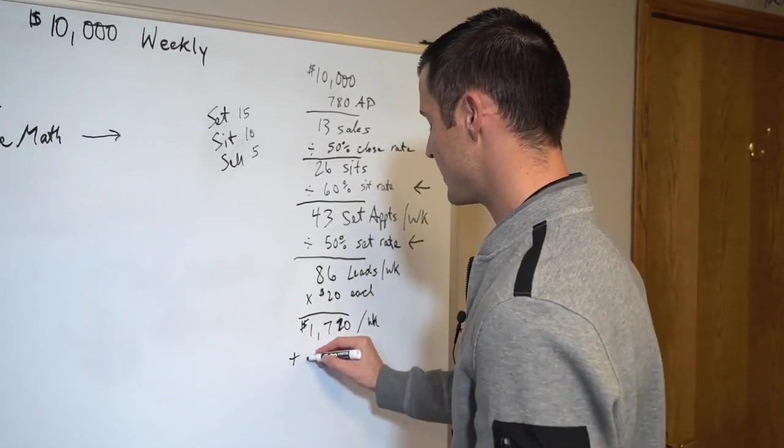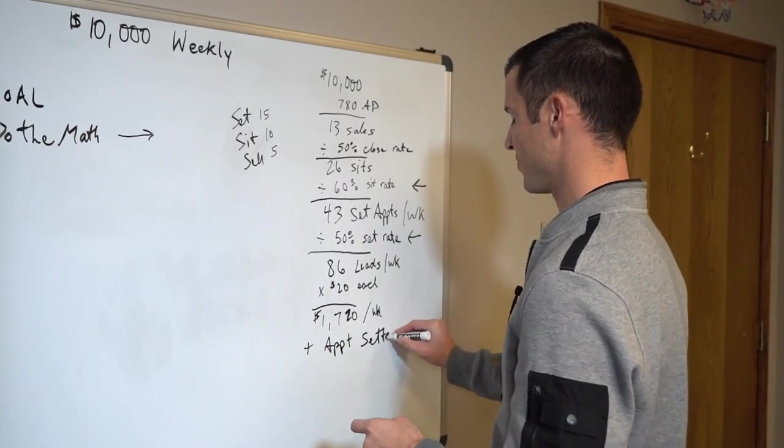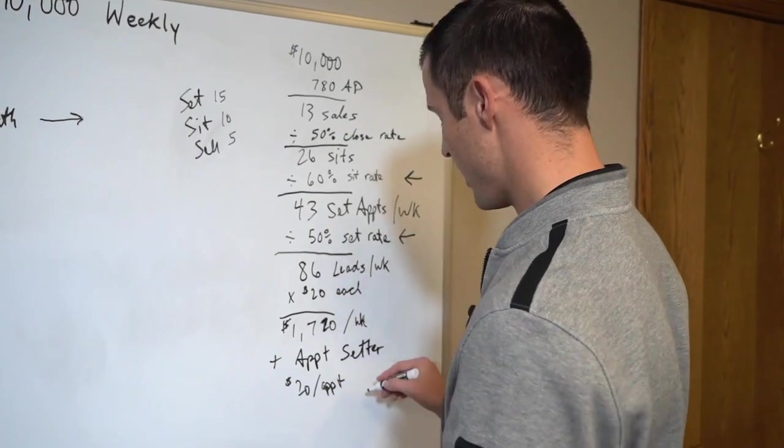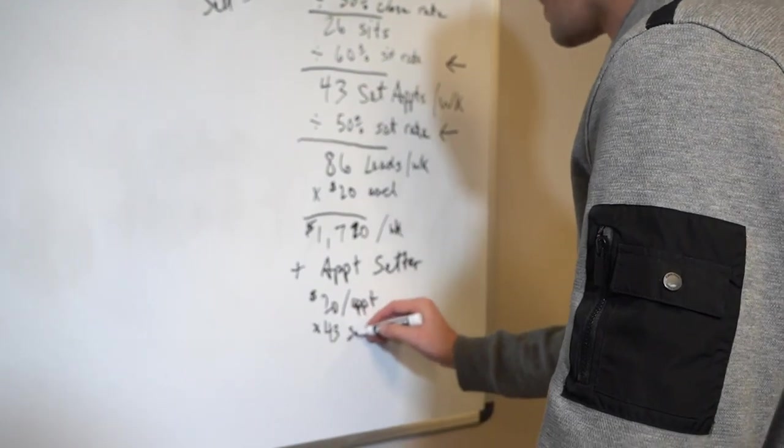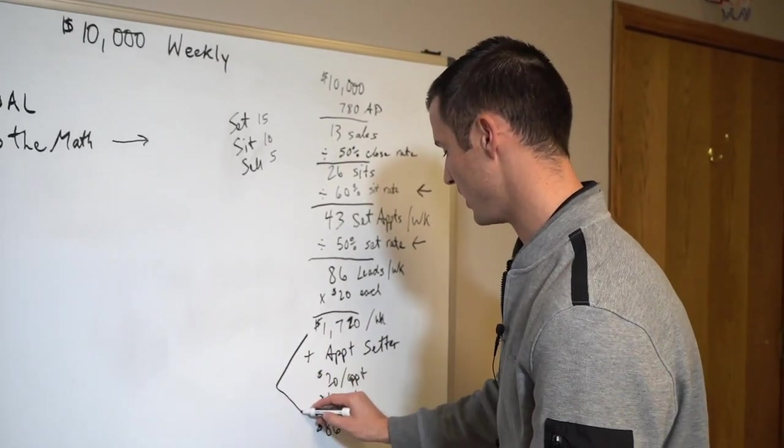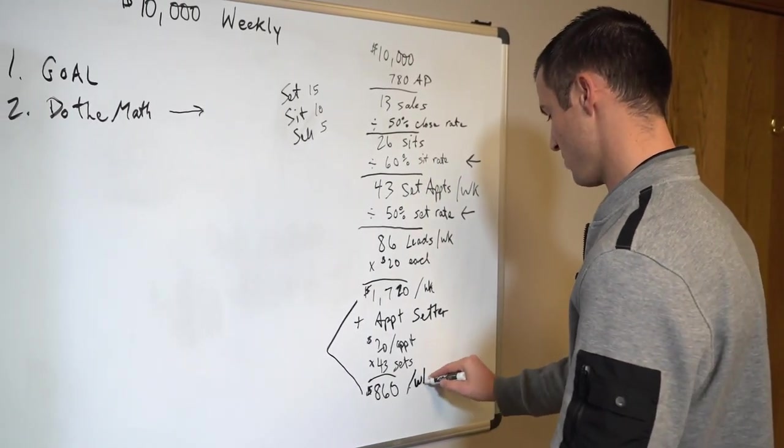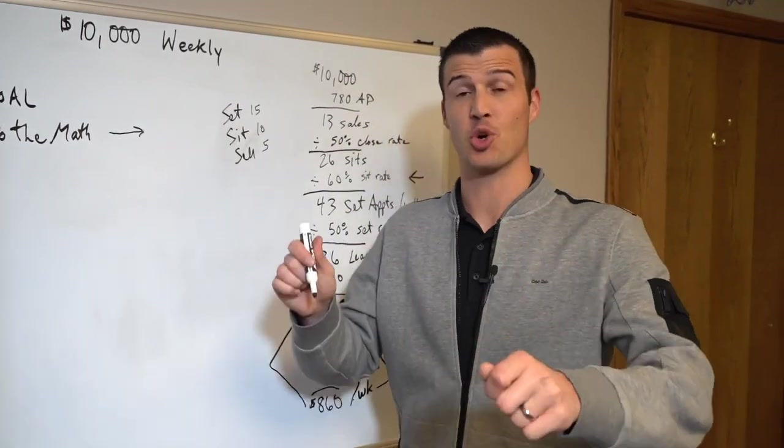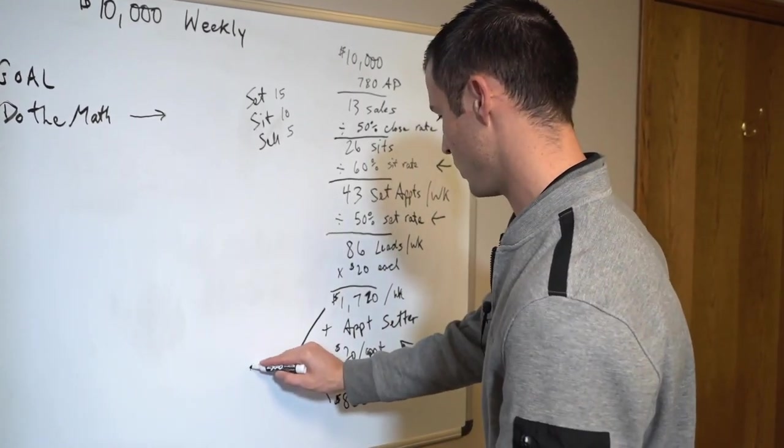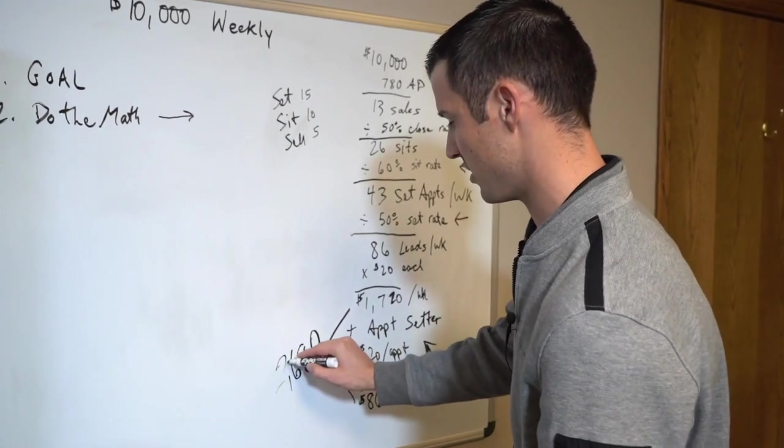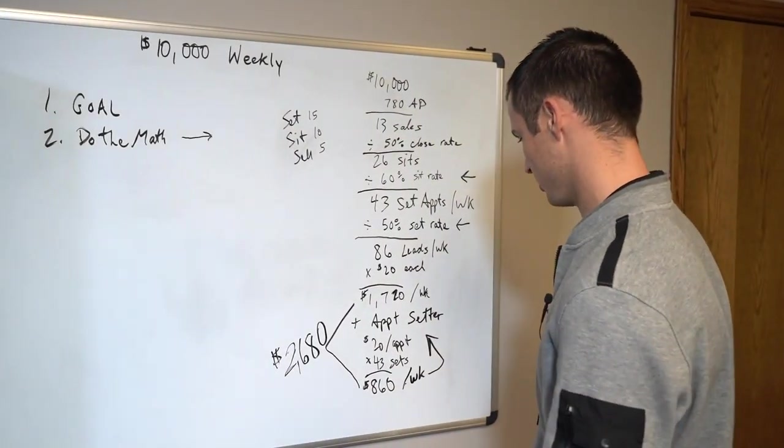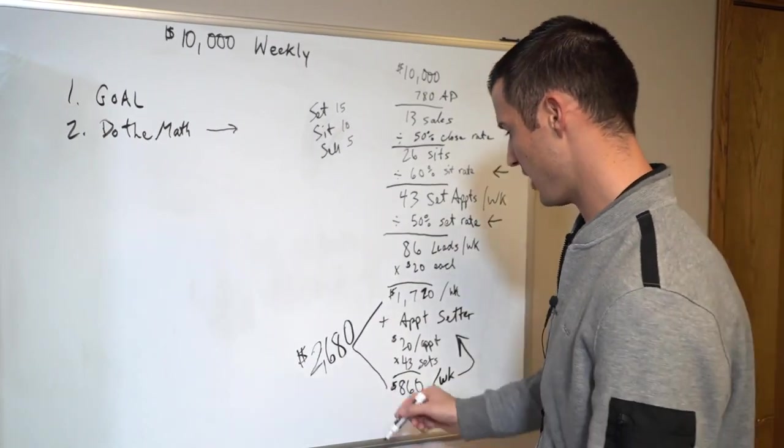Now you got to decide if you need an appointment setter. If you need an appointment setter, and let's just say that you pay $20 per appointment that they set, and they set 43, then now you got to do that math. Take that times 43 sets, which is $860. So then, not only are you at $1,720, but you've also got to add in $860 per week to pay the appointment setter. I don't know how else to break this down any easier, but these are real numbers, are legit. And you can in fact make $10,000.